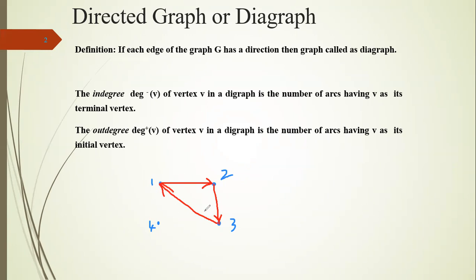This is called a directed graph. Based on this directed graph, we can see two definitions. The first one is in-degree and the second one is out-degree. In-degree is the number of arcs having V as its terminal vertex. We can split the degree of a vertex into two types: in-degree and out-degree.